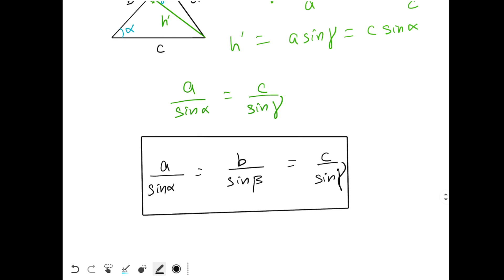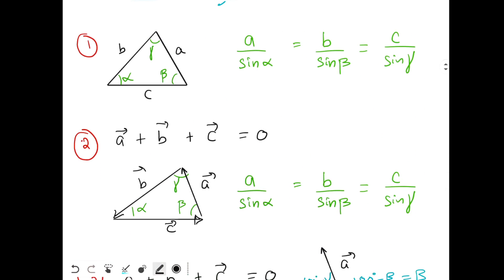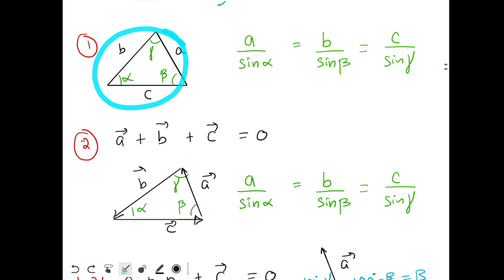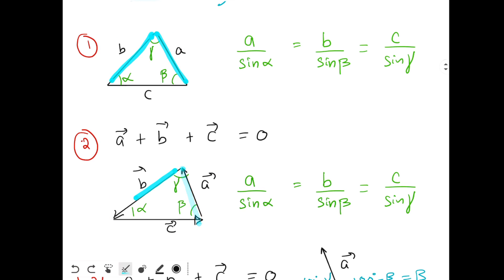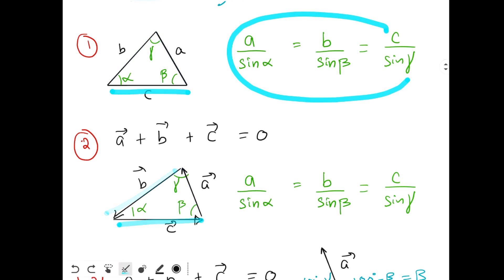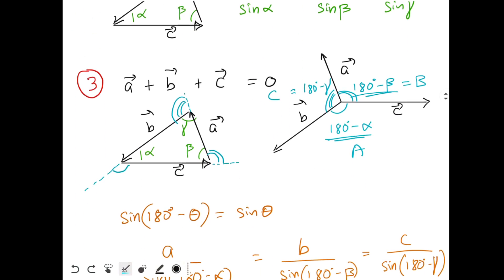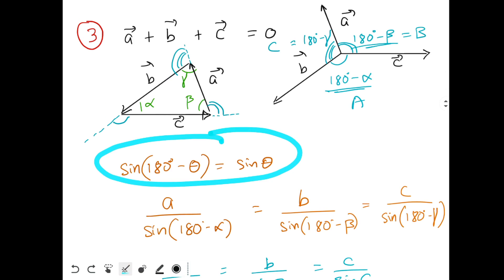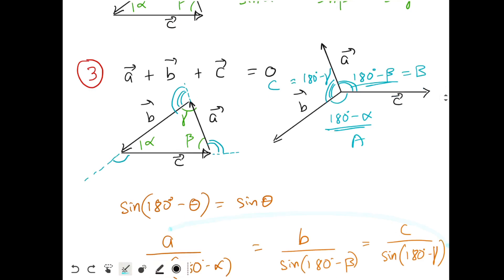Since the vector triangle is exactly identical to the triangle — side a corresponds to vector a, side b to vector b, side c to vector c — the same formula applies for the vector triangle. For the third case, once we know this formula, it is straightforward to derive the tail-to-tail form as we just did. All three conditions have been derived.